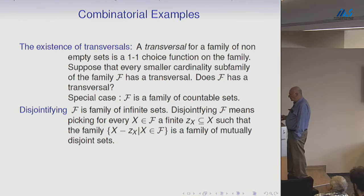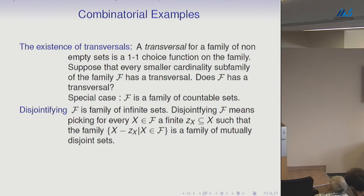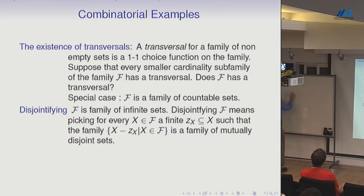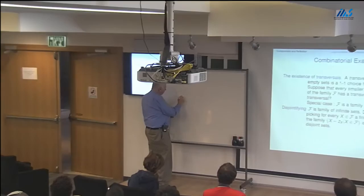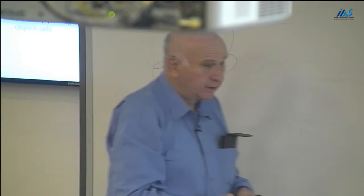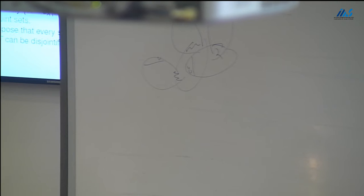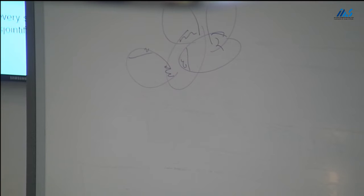Something somewhat similar is what I call disjointifying. Given F a family of infinite sets, disjointifying F means that you pick a finite subset of each of the sets so that what's left is a family of mutually disjoint sets. You eliminate some finite set from each of the sets so that they become a mutually disjoint family. Suppose that for every smaller cardinality subfamily, F can be disjointified — can F be disjointified? Again, we'll probably talk only about families of countable sets, though it's interesting in the general case.